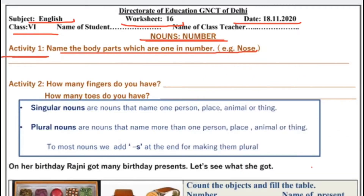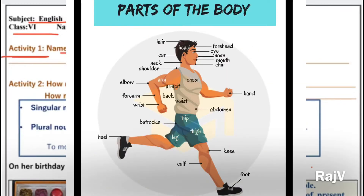Kya cheeks aapke ek hain? No. Do hain cheeks toh isko count nahi kar sakte. Toh chin kitni hai aapke paas mein? Chin ek hai. Toh aise hi aapko aur body parts bataane hain jo ki single hain, one in number. Yahaan par woh saare body parts aapko likh dene hain jo abhi humne discuss kiye hain.